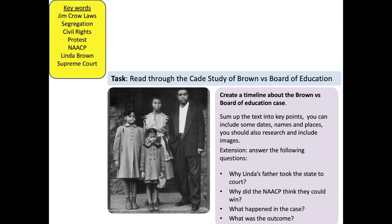On your worksheet you will see information about the case study of Brown versus the Board of Education. I would like you to create a timeline or a list about the case — sum up the text into key points, include some dates, names and places, and research and include images if you can. There's also an extension answering: why did Linda's father take the state to court? Why did the NAACP think they could win? What happened in the case? And what was the outcome? Pause the video here, read through that information carefully and take out what you want to put onto your timeline.